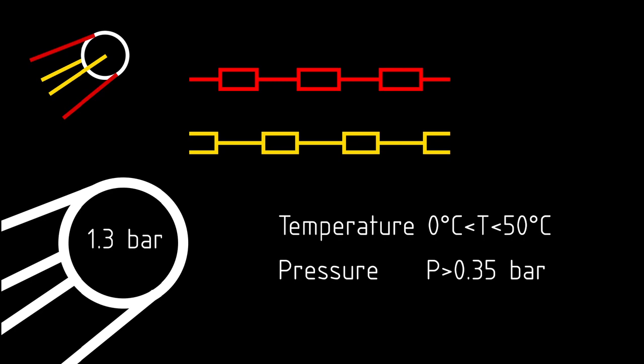Inside the beep, by changing the length of the beeps - either using one frequency more or the other - they encoded whether the pressure dropped under 0.35 bars, or if the temperature went outside the range they were comfortable with.